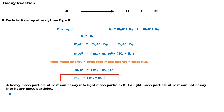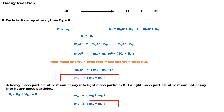If after the decay the daughter particles come to rest, their kinetic energy will be zero. In this condition, according to energy conservation, the mass of the parent particle will exactly equal the total mass of the daughter particles. In short, energy can be conserved in any nuclear decay reaction only when the mass of the parent particle is equal to or more than the total mass of the daughter particles.